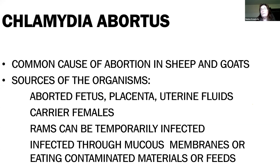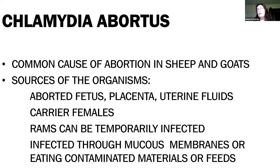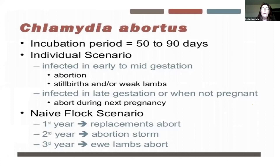We can also have carrier females that are actually shedding the organism. They can shed the organism which can be picked up by other ewes or does, and those become infected — but these carrier females are not showing any clinical signs. Occasionally we can see rams become temporarily infected by their association with infected ewes. The most common way this is transmitted is through ingestion or inhalation of these organisms when animals are exposed to infected mucous membranes, or ewes consuming birthing placentas or other birthing tissues of infected ewes.